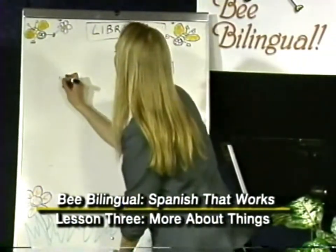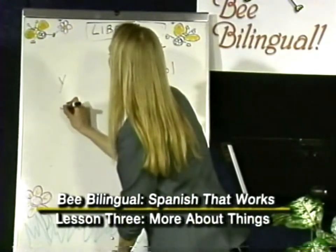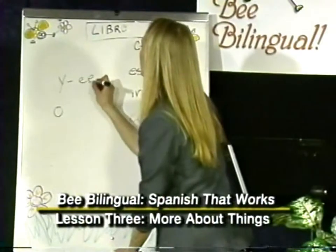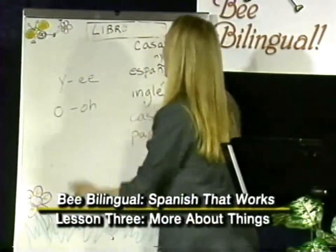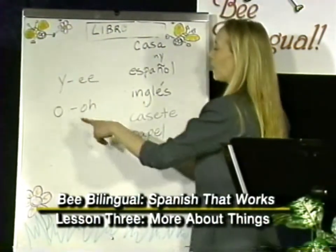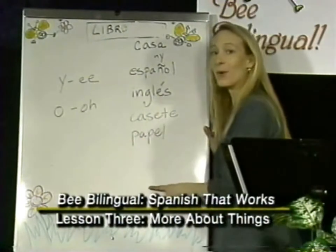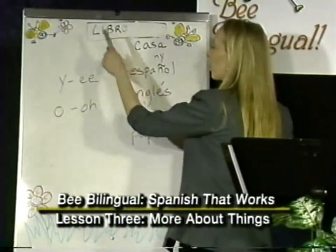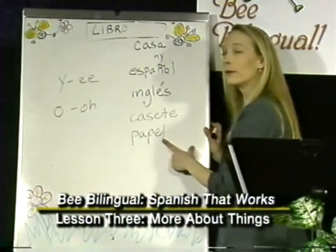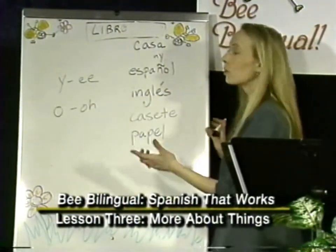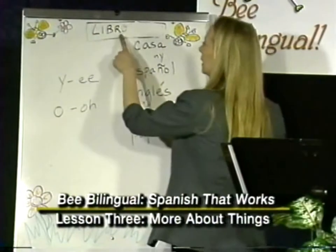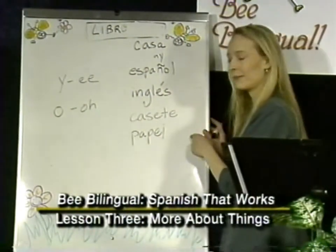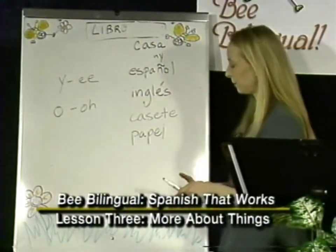Two other little words you should know are 'y,' pronounced like this, which means 'and,' and 'o,' which means 'or.' So 'book and paper' would be 'libro y papel.' 'Book or cassette' would be 'libro o casete.'